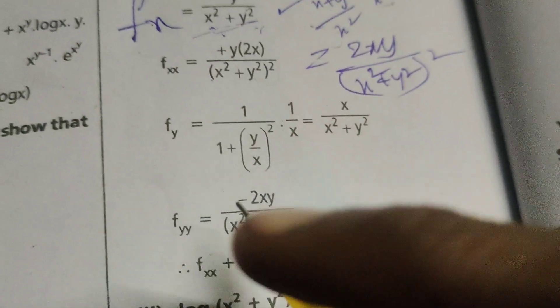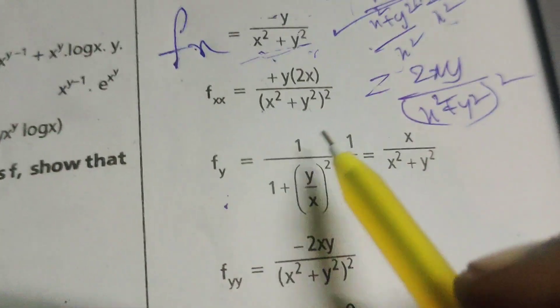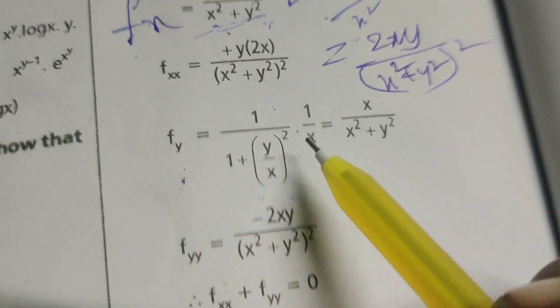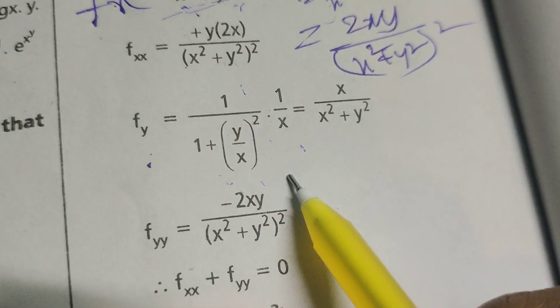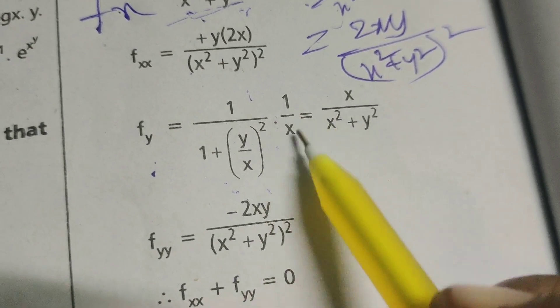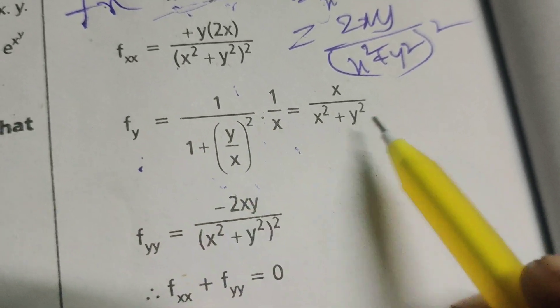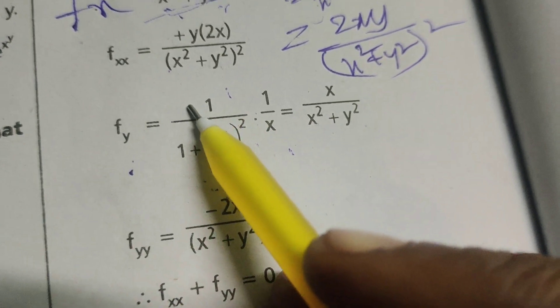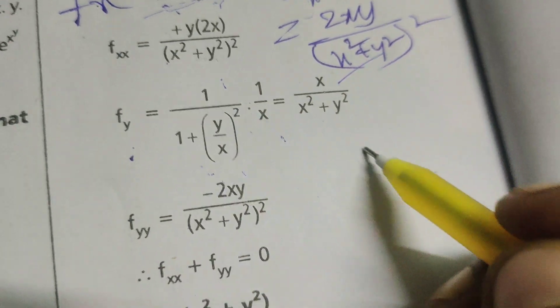Now fy, the derivative with respect to y. Here also tan inverse y by x, giving 1 by 1 plus y by x whole square. With respect to y, derivative of y by x gives 1 by x, since x is the constant. Simplifying: x square by x square plus y square, into 1 by x. The x terms cancel, giving fy equals x by x square plus y square.